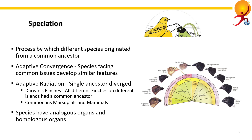The four limbs of various vertebrates such as humans, dogs, birds, etc. are examples of homologous organs. Each of them has a different function, but they have a similar bone structure and have originated from the same embryonic tissue. This is considered evidence for descent from a common ancestor.